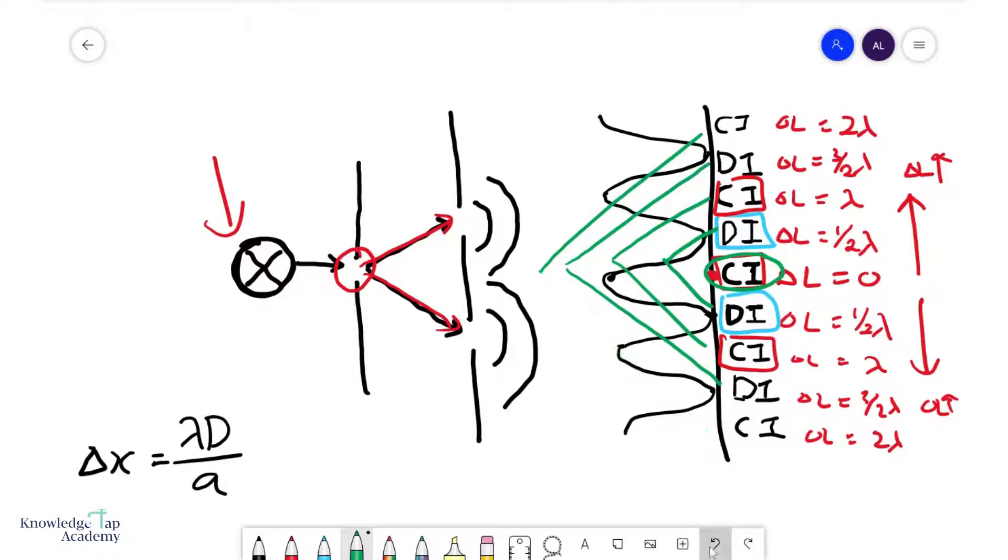Now, there is some good news. There is a nice way to characterize this entire occurrence, and that is through this formula. Delta x is defined as the separation between two adjacent maxima, or CIs,